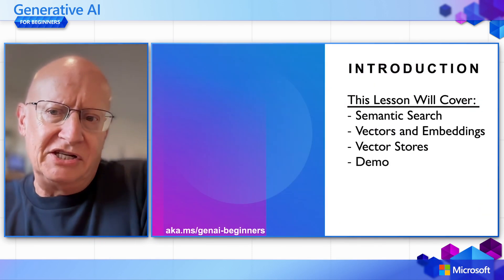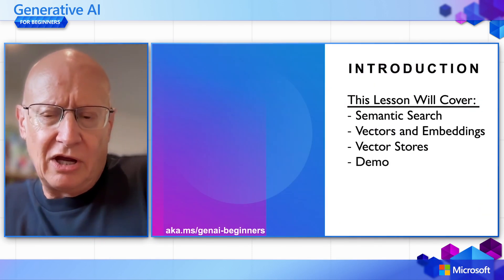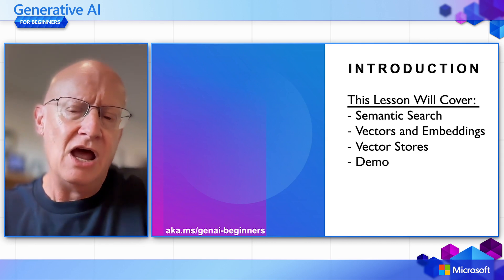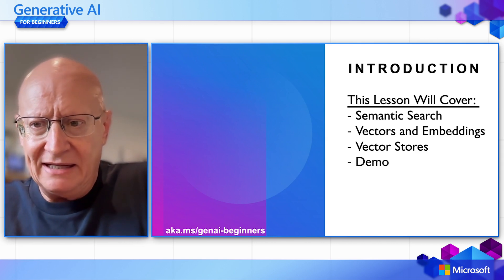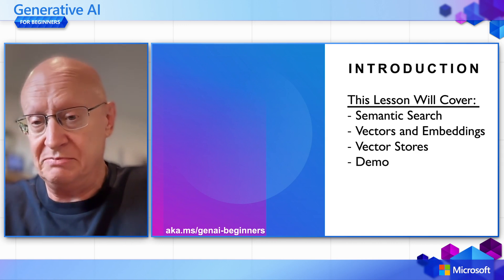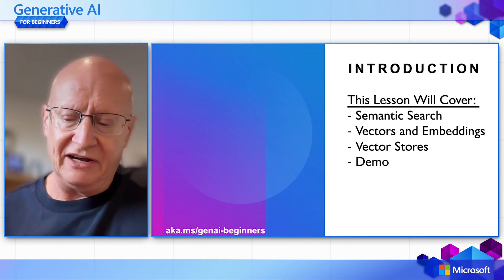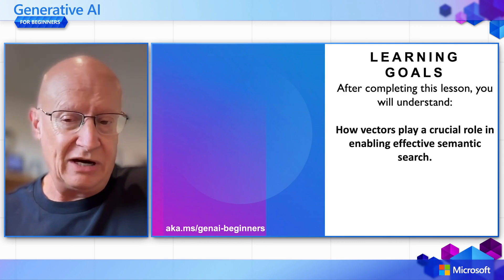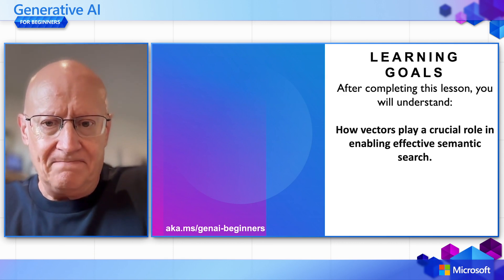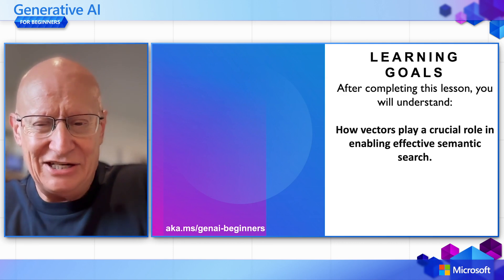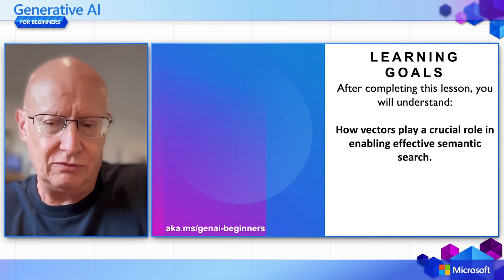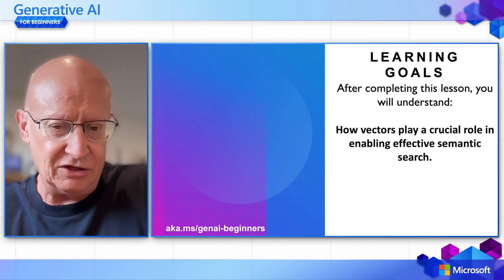So what we're going to cover in this session: we're going to look at what semantic search is, a term you might have heard. We're going to talk about vectors and embeddings — what the difference is between them. We're going to talk about vector stores, and we've got a couple of demos. The goal is that at the end of the session, you'll have a better idea how vectors play a crucial role in enabling effective semantic search.